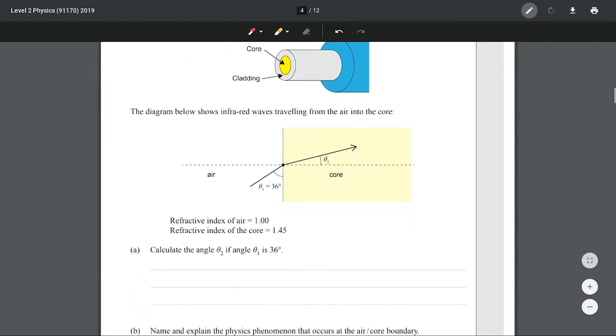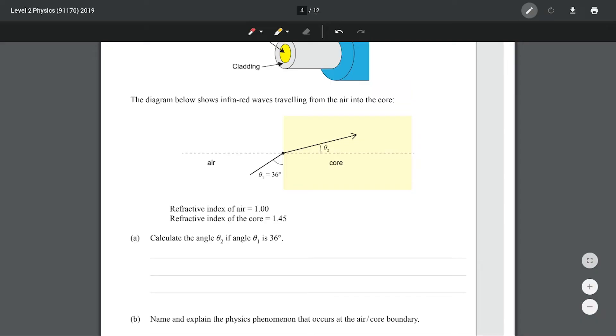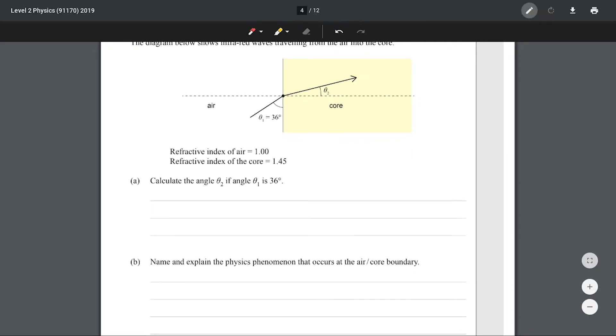On to question two, fiber optic cables. The diagram shows infrared waves traveling from air into the core. Calculate angle two if angle one is 36 degrees. Right off the bat they're trying to trap you. They've given you the angle that you don't need. 36 degrees is not the angle of incidence, this one here is. To find that you need to go 90 minus 36, which means that this one is 54 degrees.